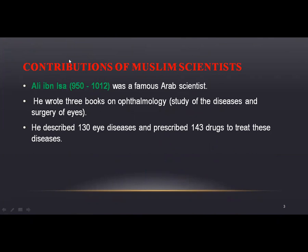The first Muslim scientist was Ali ibn al-Nisa. His duration was from 950 to 1012. Ali ibn al-Nisa was a famous Arab scientist. He wrote three books on ophthalmology — the study of diseases and surgery of the eyes. He described 130 eye diseases and prescribed 143 drugs to treat these diseases.